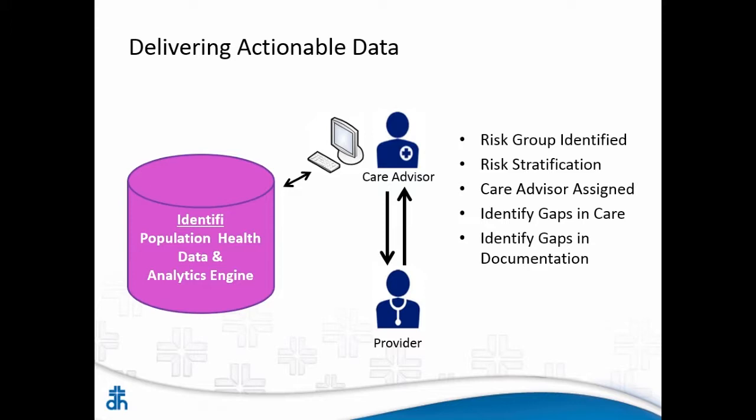For example: Steve may have gone to the emergency room three times with breathing problems and he's got medications related to breathing, but nowhere in his record does it say he has asthma. The system may pull out: 'Hey, this guy may have asthma' and prompt the physician to ask that question. The physician may document yes or no — but it will prompt for that next step. Or it might say he's never had a referral to a pulmonologist — maybe he would benefit from one. That information goes to the care advisor or provider to suggest or prompt those things.